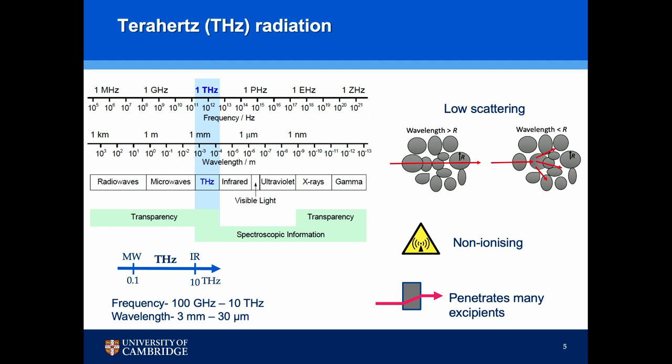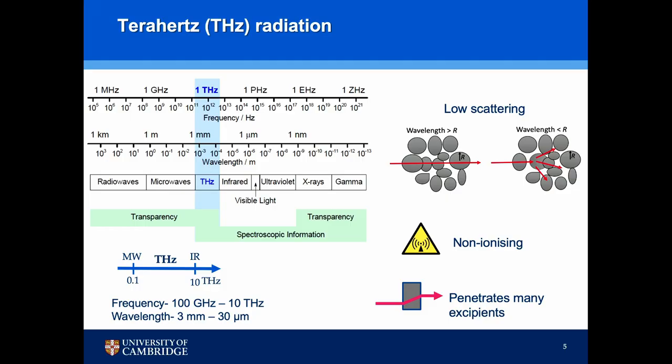Terahertz radiation is basically electromagnetic radiation sandwiched between the microwave and the infrared, covering a frequency range of 0.1 to about 10 Terahertz. Three of the most important properties that make it useful for testing pharmaceutical tablets are: low scattering, because the longer wavelengths of this radiation compared to the typical particle size in pharmaceutical powders result in very low scattering; it is non-ionizing; and also many pharmaceutical powders, especially excipients, are transparent in this region.